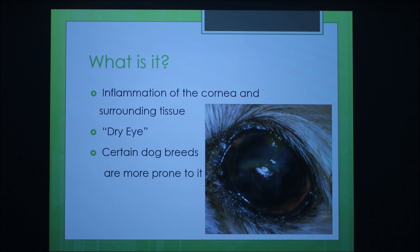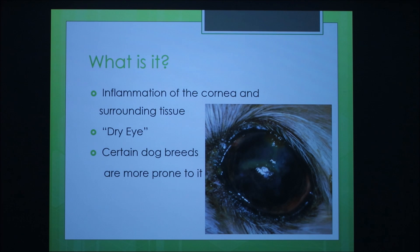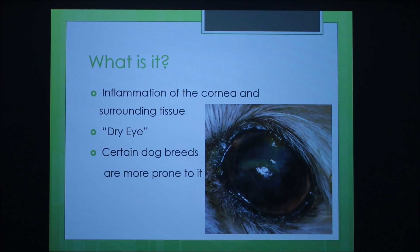Keratoconjunctivitis sicca is the inflammation of the cornea and surrounding eye tissue, which affects the tear production of the eye for the dog. This is also known as dry eye, and certain dog breeds are more prone to it, like the little dogs with the giant eyes — Shih Tzus, Pugs, English Bulldogs, and other dog breeds.